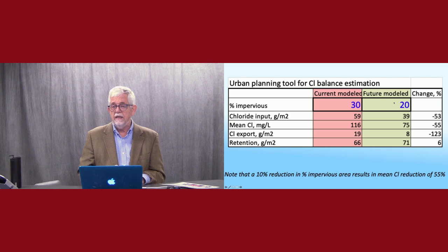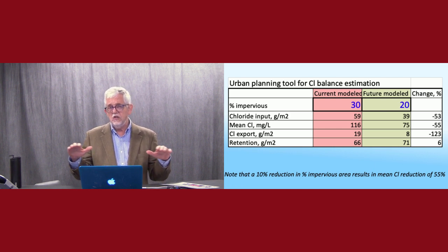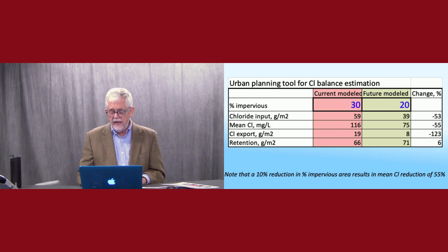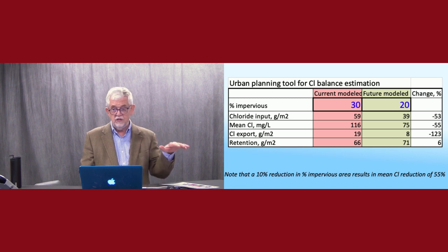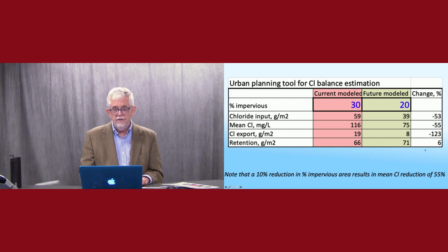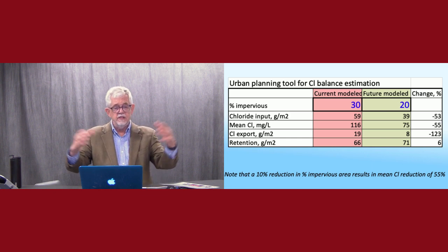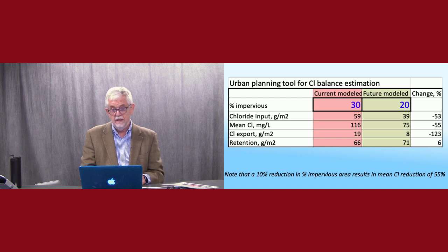And here's the values. And then we go to a 10% reduction in impervious surface. If you do that, you decrease a lot of these things. Just that little change, you get a 53% reduction in chloride input. That's the salt being added, which just reflects the difference between 20% and 30%. You get a 55% reduction in mean chloride. 123% reduction in the chloride export. So this is the amount of chloride in pounds per meter squared or grams per meter squared. And you don't change the retention very much. So this is the kind of thing during redevelopment that we might use.